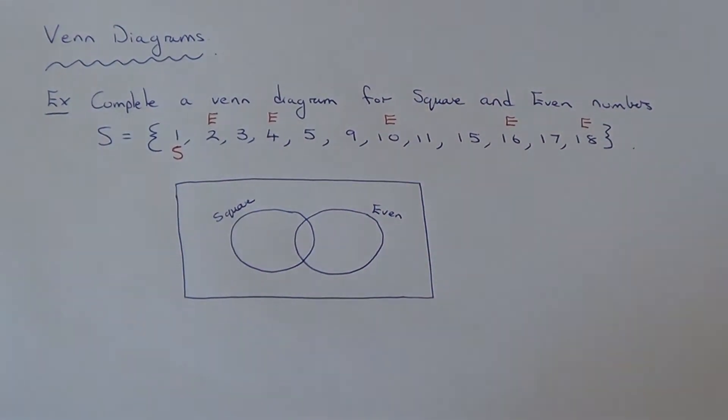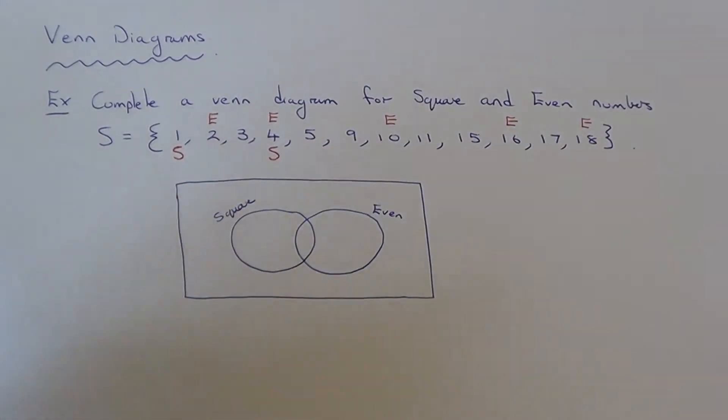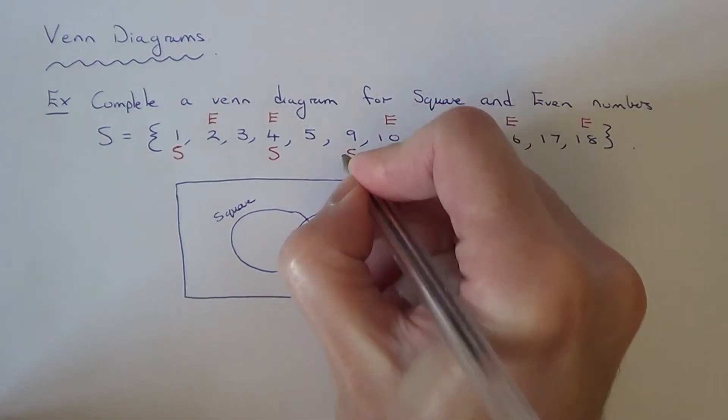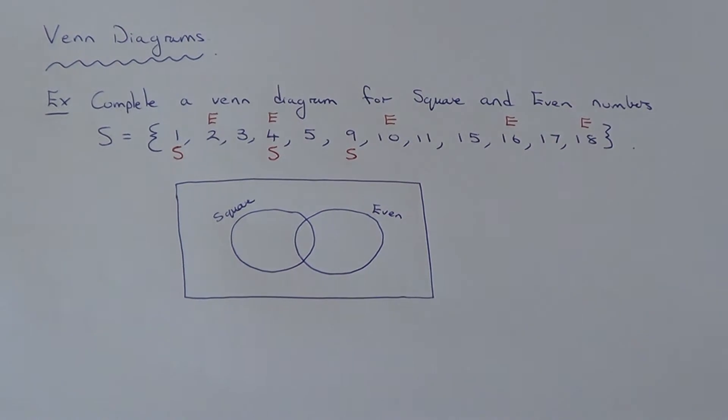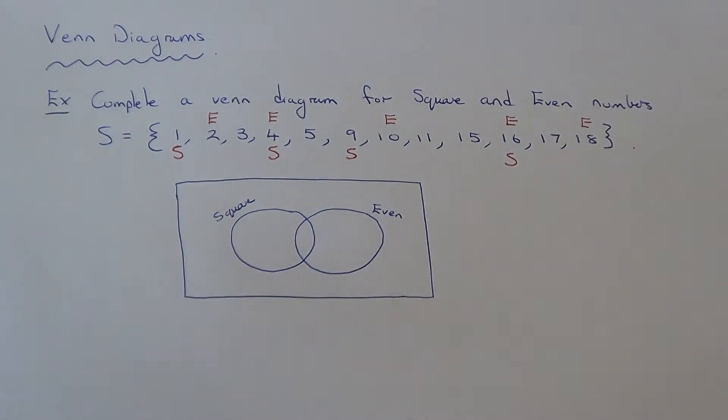Next square number is 2 times 2 which is 4, that's a square number. The next square number is 3 times 3 which is 9, so 9 is also a square number. The next one is 4 times 4 which is 16, 16 is also a square.